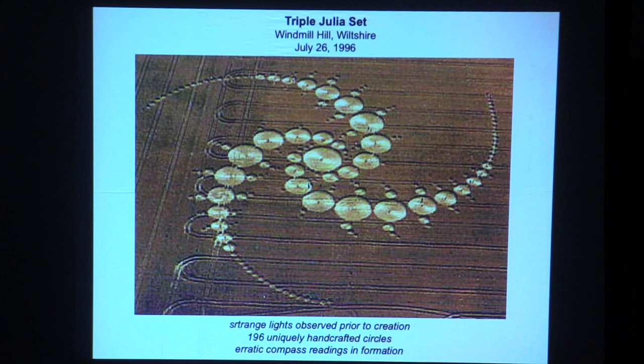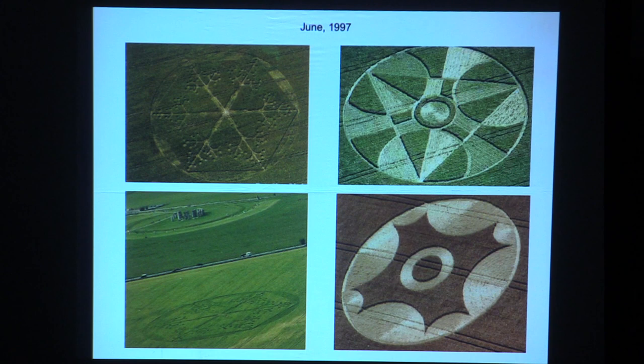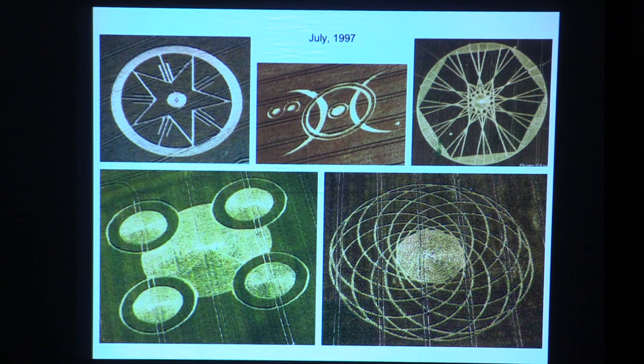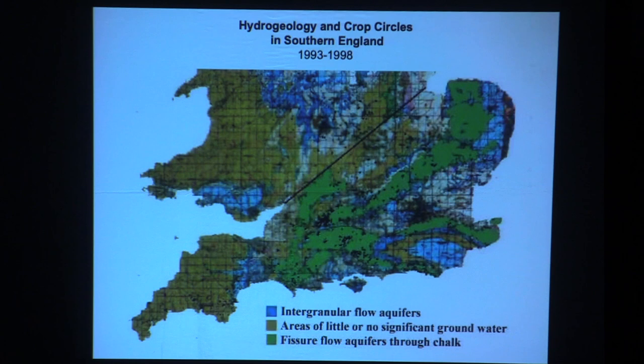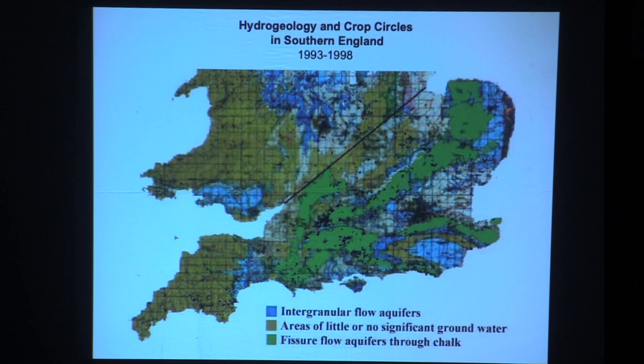Once again, right across the road from Stonehenge, we see six tree-like shapes emanating from a central point — in 1997. And lower right, it looks like a torus, giving the illusion of a three-dimensional object. All of these formations I've shown — except the one in Canada — are in southern England. It's not because they don't happen elsewhere, but every year the vast majority and the most impressive ones have been in southern England.